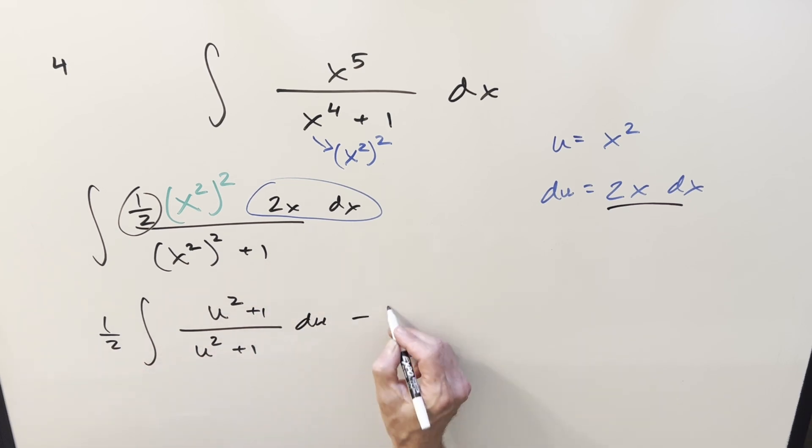so we'll distribute to the 1 half. We have minus 1 half, write it as 1 du over the same denominator, u squared plus 1. Here, this cancels and this is just 1. So we integrate, we just get 1 half u right here, minus 1 half. And then this is going to be arc tan of u.